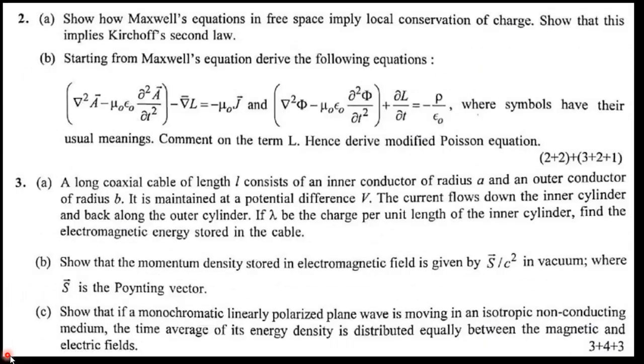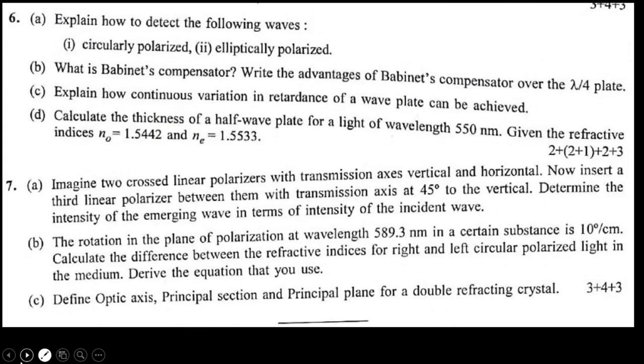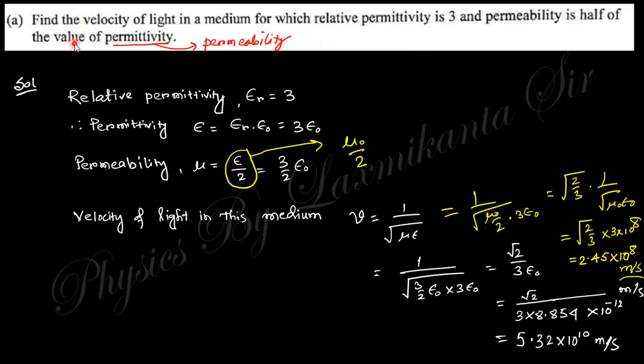Today we will discuss question number 1, and next class will discuss 2, 3, then 4, 5, 6, 7 and so on. So stay connected. Today we will discuss question number 1. You can see the first question: find the velocity of light in a medium for which relative permittivity is 3.